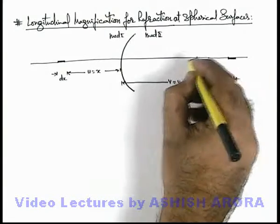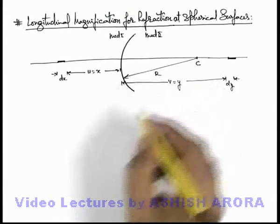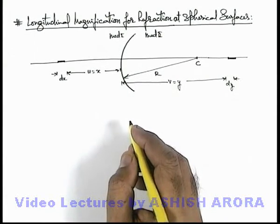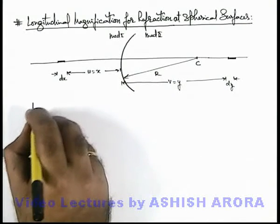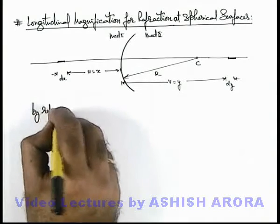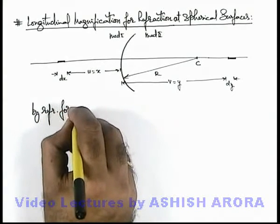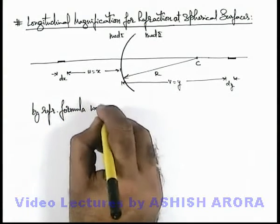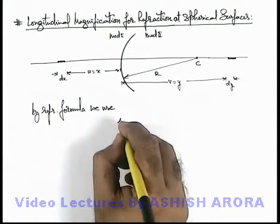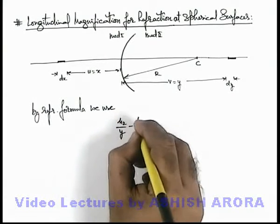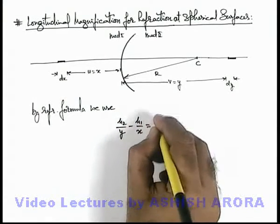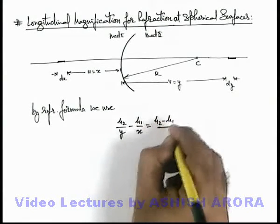Then in this situation, if r is the radius of curvature for the spherical surface, we can write by refraction formula we use mu 2 by y minus mu 1 by x is equal to mu 2 minus mu 1 by r.